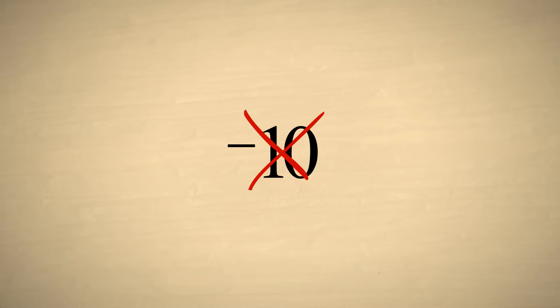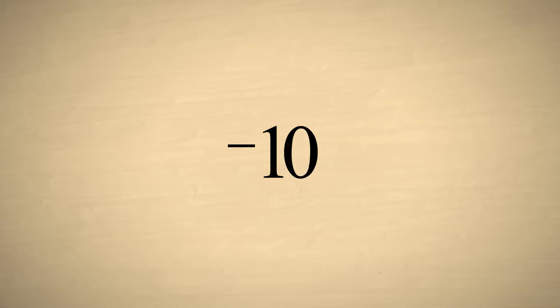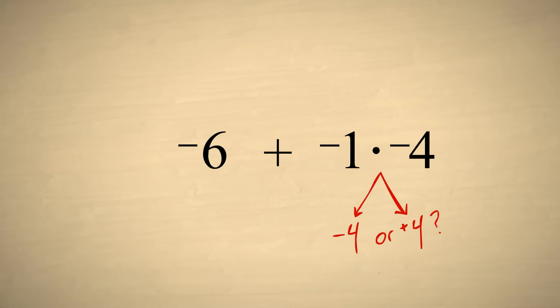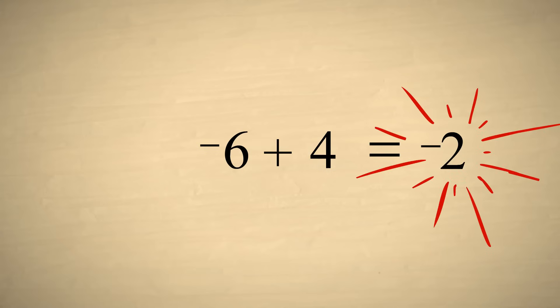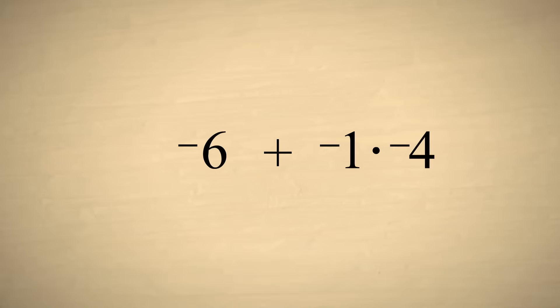But the answer should be negative 2, so this is not correct. The other possibility is that multiplying two negative numbers gives a positive result. In that case, negative 1 times negative 4 would be positive 4. We then add positive 4 to negative 6, which gives us negative 2, the correct answer. So we get the correct answer if we make the rule that the product of two negative numbers is positive.